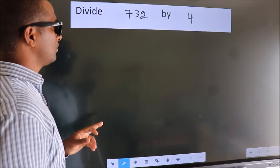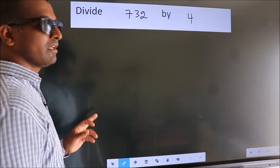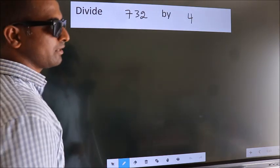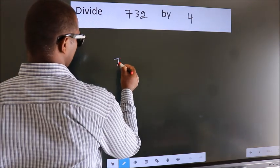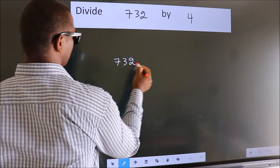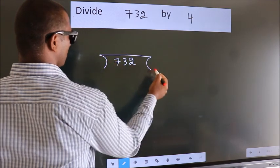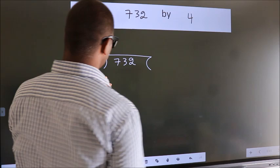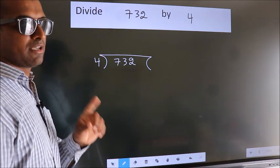Divide 732 by 4. To do this division, we should frame it in this way. 732 here, 4 here. This is your step 1.